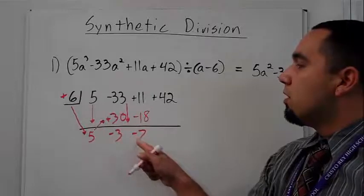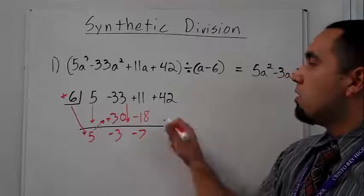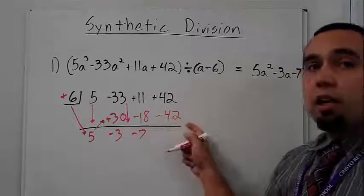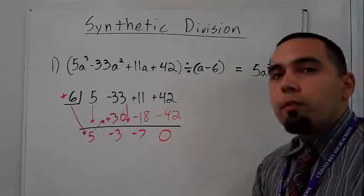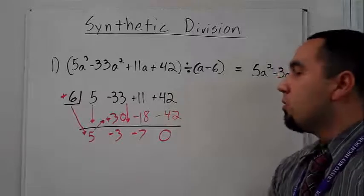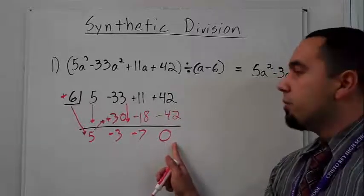And negative seven times positive six is negative 42. And again, I add. I get zero. With the problems we're going to do right now, you should always, always get a zero in your last term.